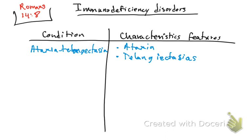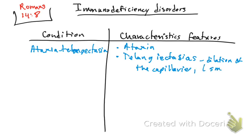Telangiectasia is a dilation of the capillaries. So basically there is a dilation of the capillaries, and it is going to appear as small red-purple clusters — like spider-like appearances on the skin or on the surface of the organ.